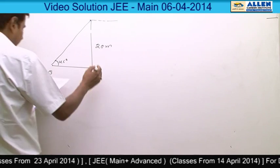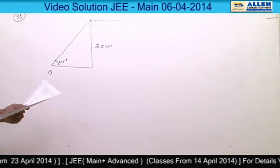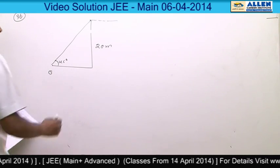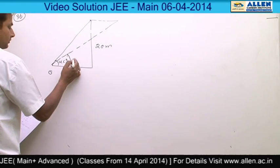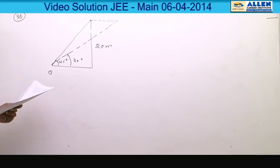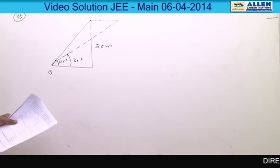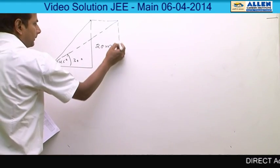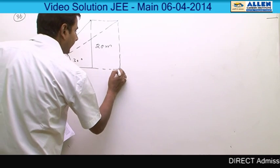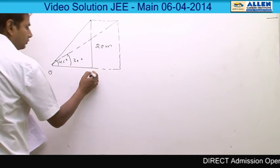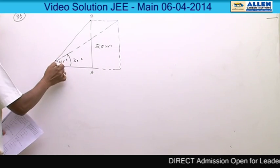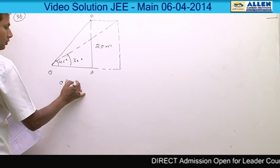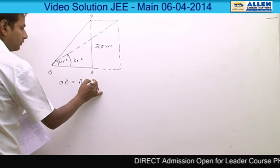After one second, the elevation of the bird from O is reduced to 30 degrees, means this angle becomes 30 degrees. Then we have to find out speed of the bird. If we draw perpendicular from this point and extend this line up to that point, assume this point as A and B. If this complete angle is 45, this implies OA is equal to AB, which is 20.